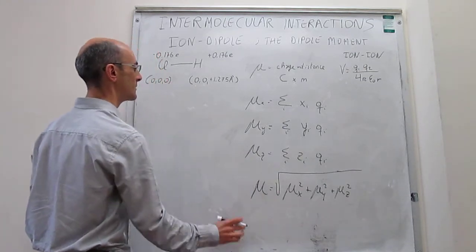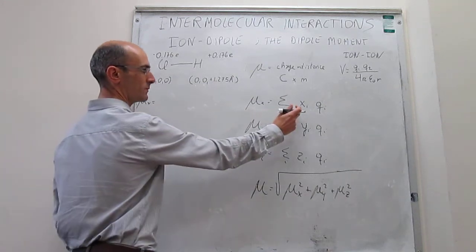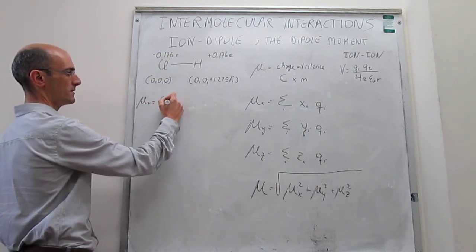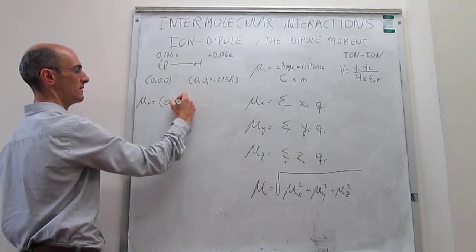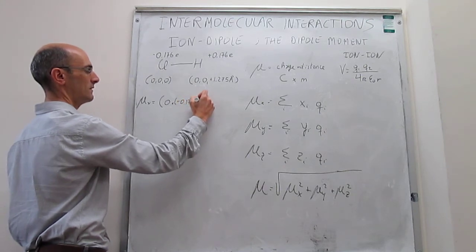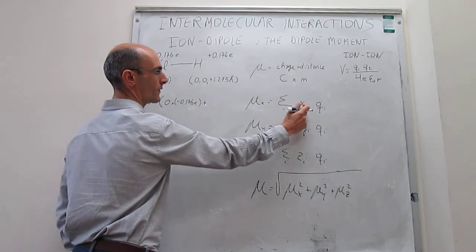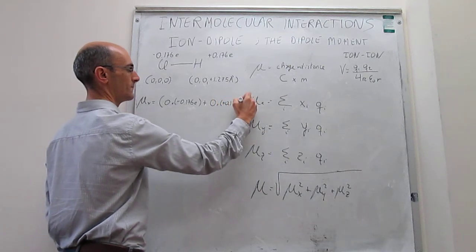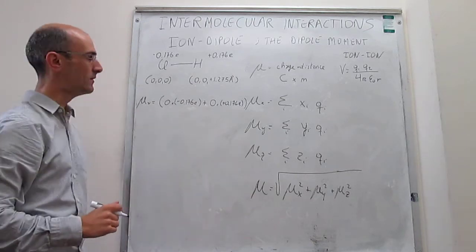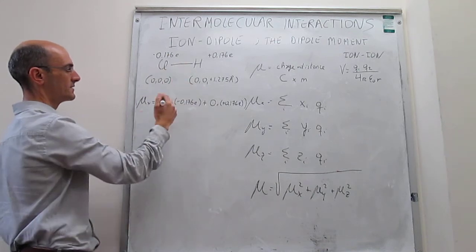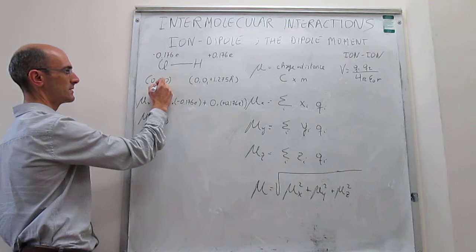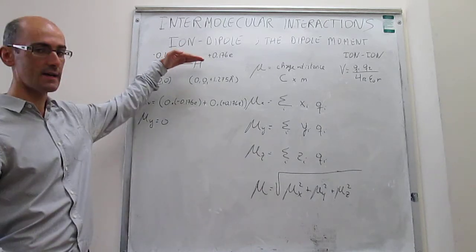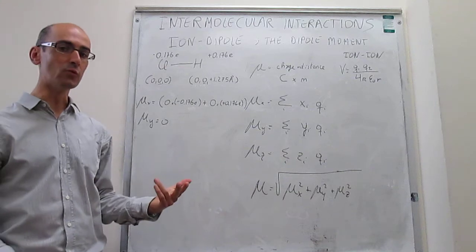Now we're ready to calculate the dipole moment in each direction. For μx: we multiply each atom's x-coordinate by its charge and sum — for Cl, 0 × (−0.176e), plus for H, 0 × (+0.176e) — so μx = 0. The same logic gives μy = 0, since both atoms have y-coordinates of zero. But the molecule is aligned along the z-axis, so there will be a non-zero dipole moment in that direction.